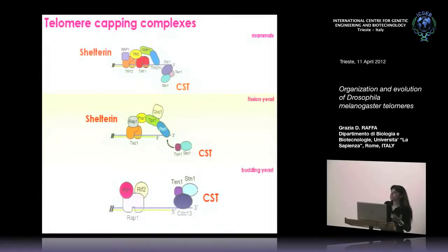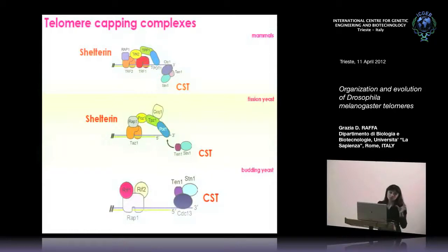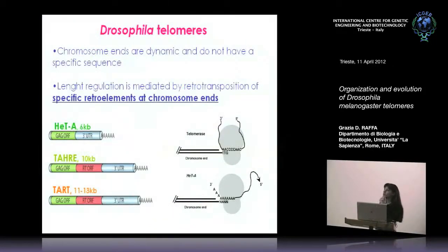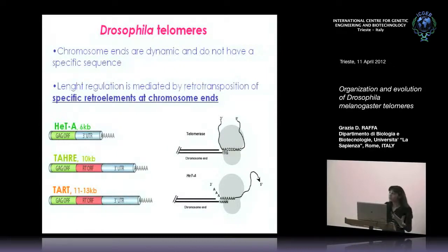Why did budding yeast lose shelterin components? Because in budding yeast there is high variation of terminal sequences — while most eukaryotes have simple repeats generated by telomerase, in budding yeast there is high variation within the Saccharomycotina clade of the telomeric sequences, so they needed a more flexible way to protect their telomeres. Speaking of differences, let's go to Drosophila, which is quite peculiar because in this species telomerase has been lost, and as a consequence, chromosomes do not terminate with specific sequences — they are dynamic. A different mechanism for telomere maintenance was developed, based on the retrotransposition of specific retroelements at chromosome ends.